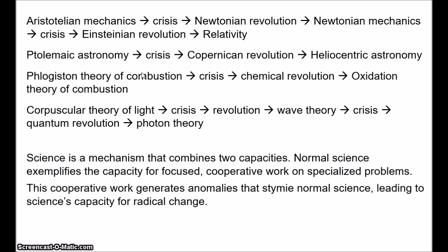Eventually a new framework emerges and normal science continues. For Kuhn, the success of science lies in the tension between these periods of dogmatism and then these short bursts of radical debate — these more chaotic debates. So that's Kuhn's theory. In the next video we'll look at the philosophical implications, focusing mainly on incommensurability between different paradigms and some of the problems that raises. But that's all for now. Thanks for watching.